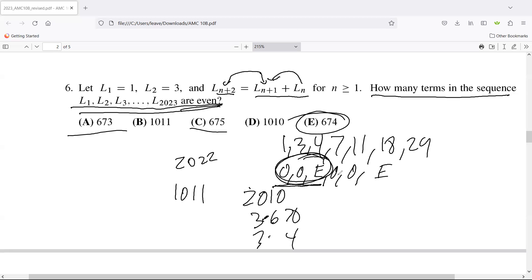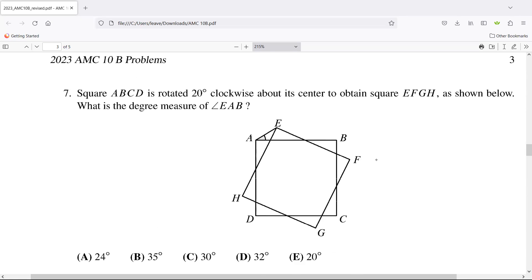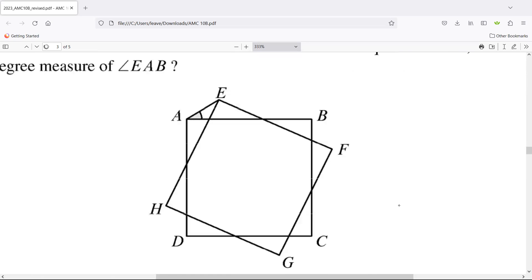Clear screen and go to problem seven. Square ABCD is rotated 20 degrees clockwise about its center to obtain EFGH as shown below. What is the degree measure of angle EAB? I'm just going to zoom in. It's 20 degrees rotation clockwise about its center. The thing about rotations is the distances from a point to where its new point remains the same.